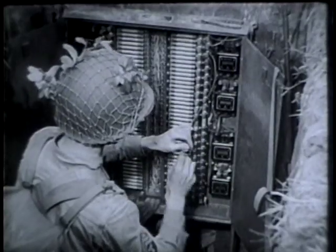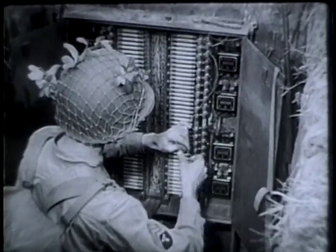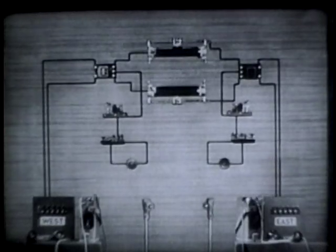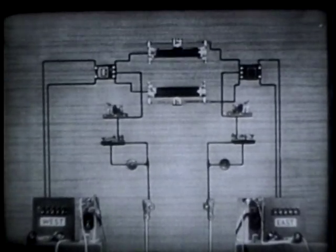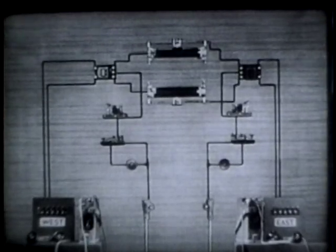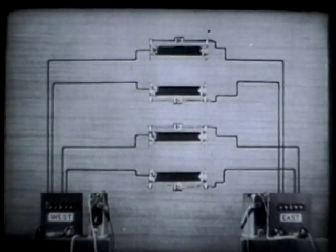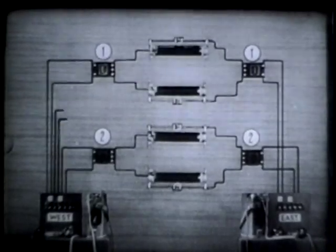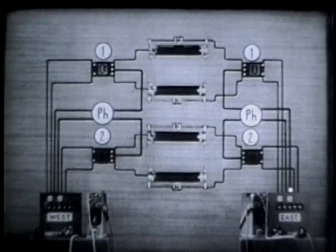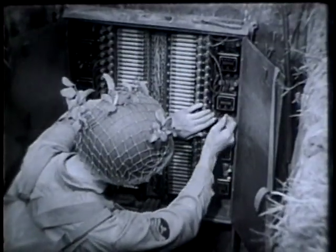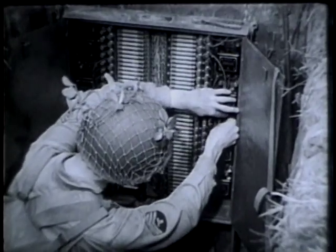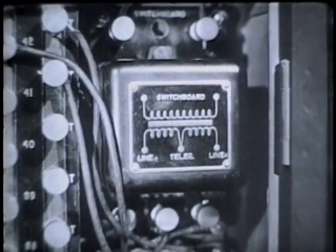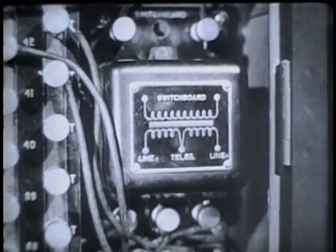Simplex and phantom circuits are used extensively throughout the army. Every wireman should know how they work. The simplex circuit is obtained by connecting repeating coils at both ends of a line and using the earth as a return conductor. The phantom circuit is obtained by connecting repeating coils at both ends of two lines. Instead of using one telephone line and the earth as conductors, the phantom uses two telephone lines. Because simplex and phantom circuits increase the telephone and telegraph capacity of existing lines, the proper use of repeating coils eliminates the trouble, danger, and time of laying miles of extra wire.